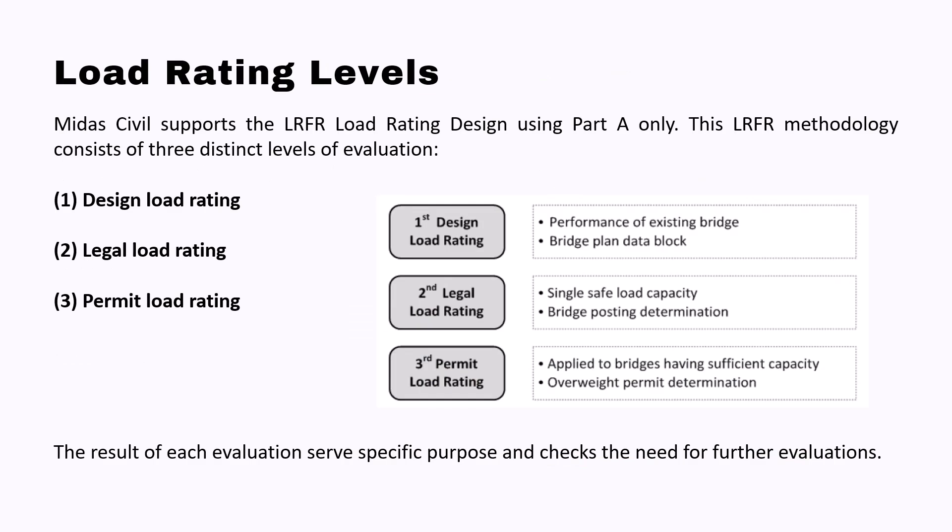Load rating has different levels. The three different rating levels are: design load rating, legal load rating, and permit load rating. Design load rating is the performance of the existing bridge for the design vehicles. If the design load rating is not satisfactory or the RF has missed the target, we go for legal load rating. In legal load rating, we check for a single safe load capacity — we consider a single vehicle and check if the bridge is able to carry that load, which is always less than the design live load. This helps in bridge posting determination. Permit load rating is for a higher load than the design live load — applied to bridges with sufficient capacity, for example, when a military truck should pass, to check how much overweight permit can be provided.